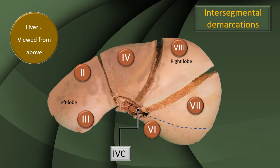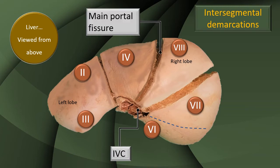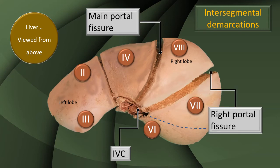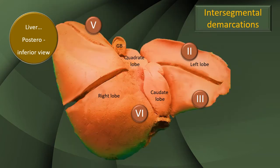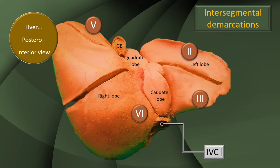Once again, the IVC. That's the main portal fissure. Remember, none of these fissures are actually present in the liver — these are fissures created as part of the dissection to understand the surgical anatomy. Right portal fissure. Now, the same liver on the inferior surface: see the corresponding changes, and I have labeled the segments that can be identified on the inferior surface. The IVC is very easily identified in its close relation to the caudate lobe.